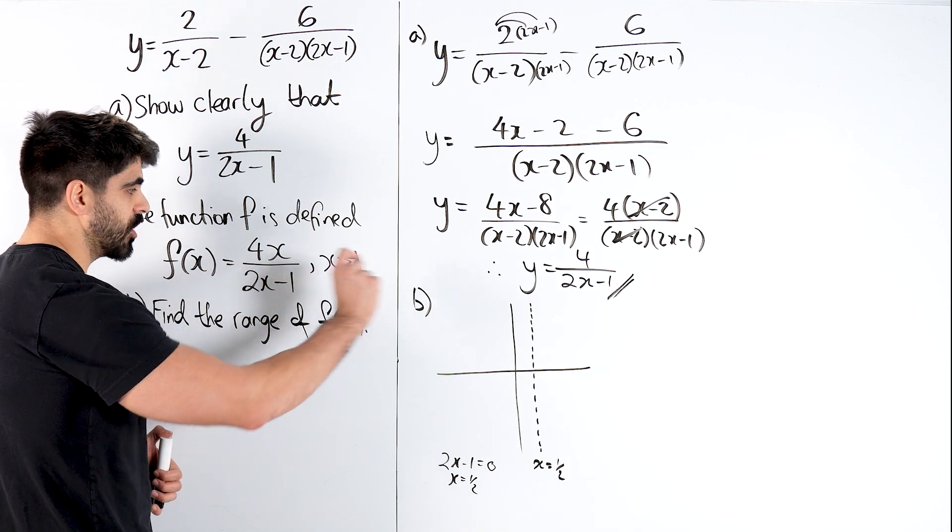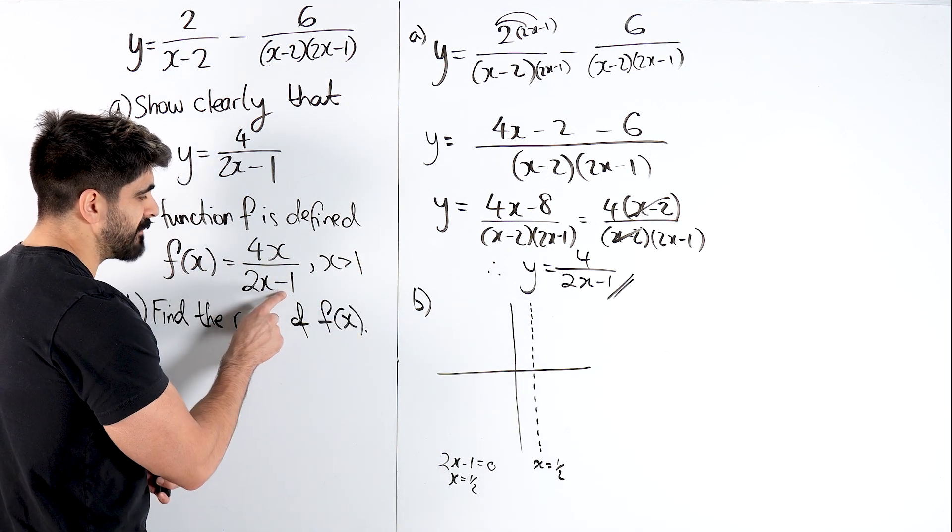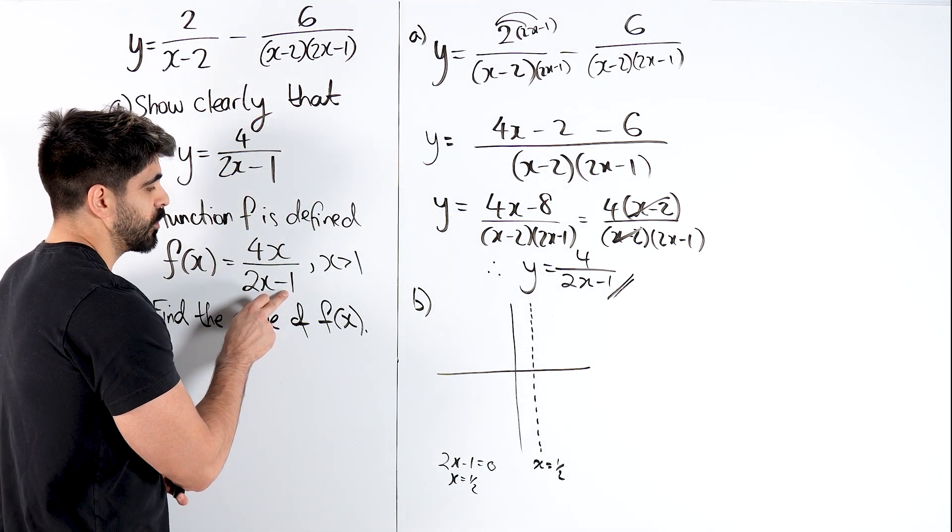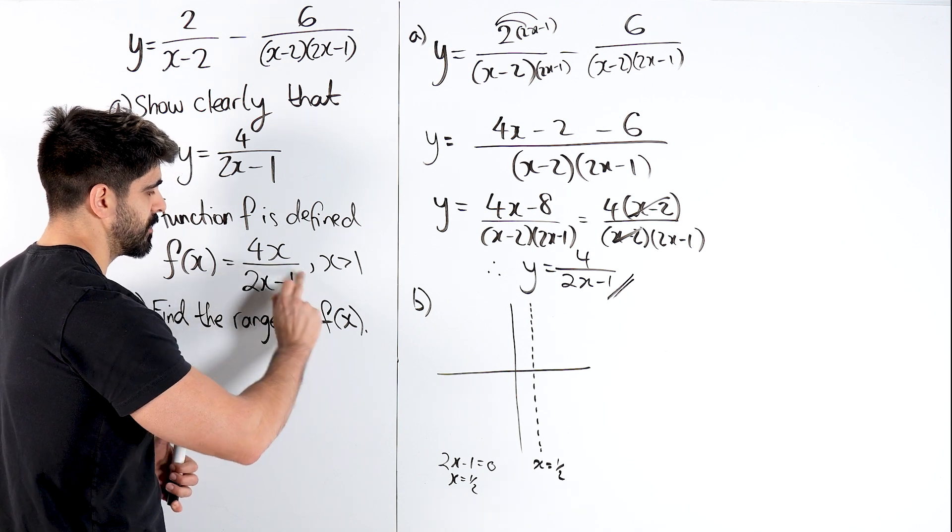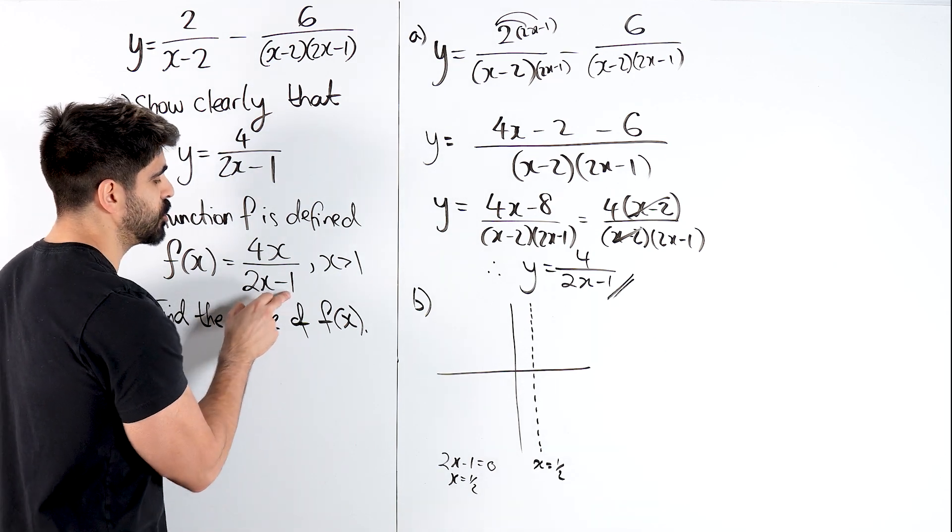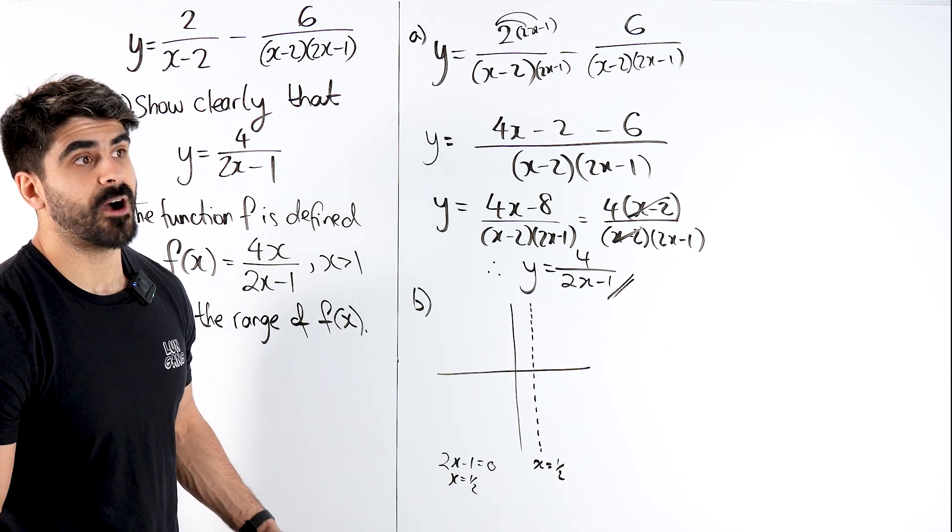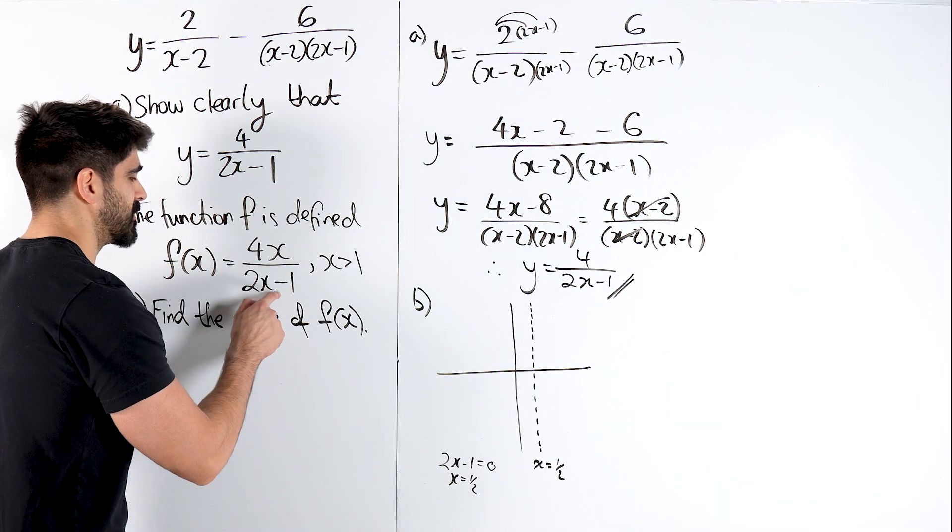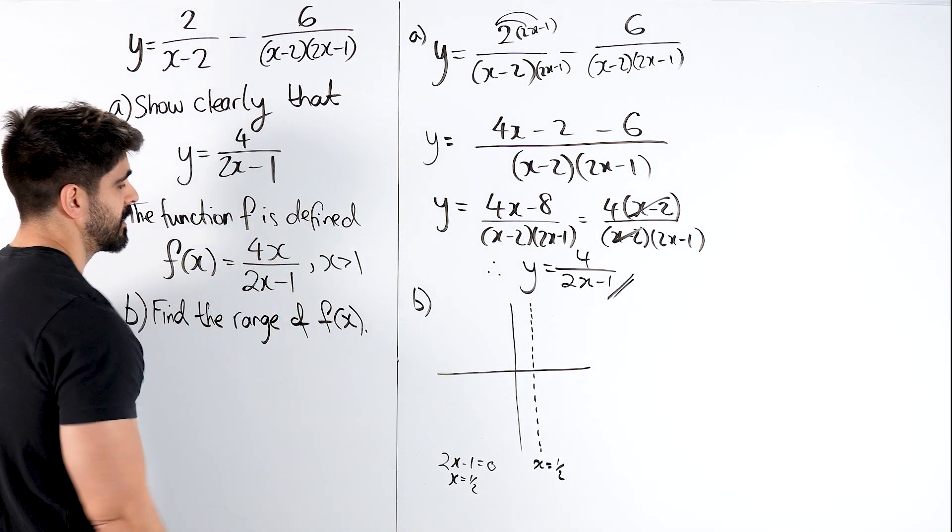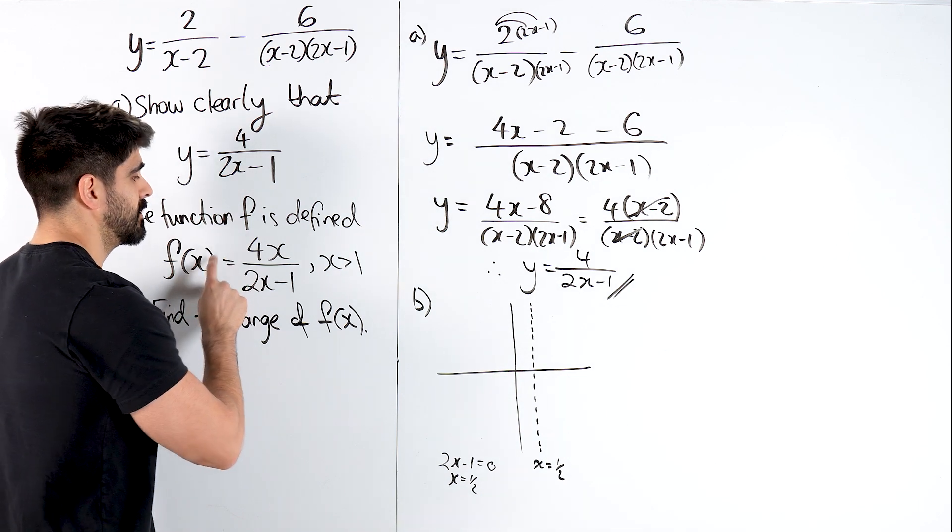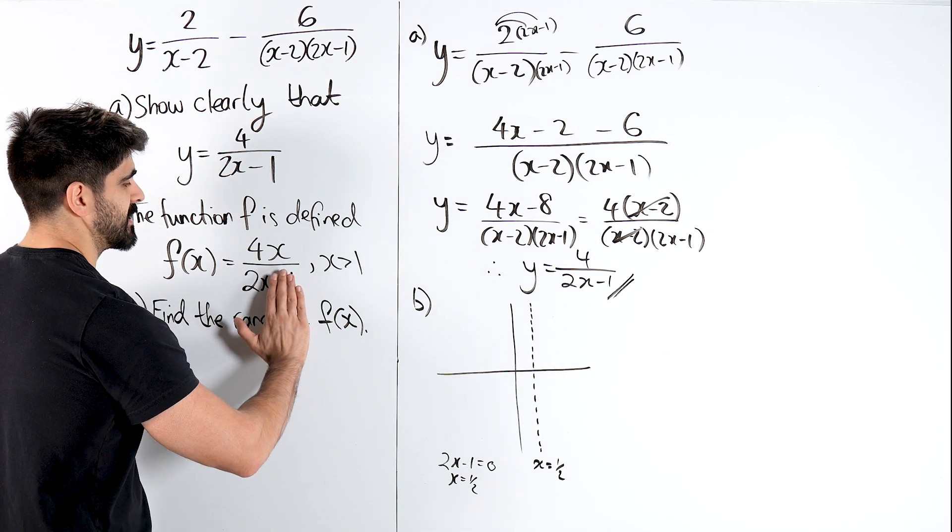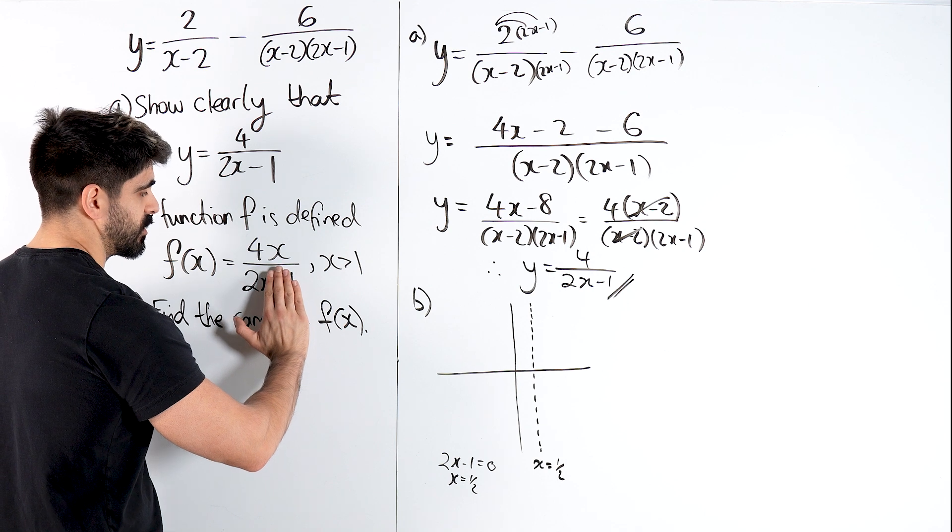As x gets larger, this minus 1 is really insignificant with respect to the value of this function. If x is a billion and you have two billion pounds, would you care about losing a pound? I would hope you say no. In the grand scheme of things, it would not change the value of this division. 4 billion divided by 2 billion minus 1 - that minus 1 is insignificant. You're left with 4x divided by 2x, which is 2.